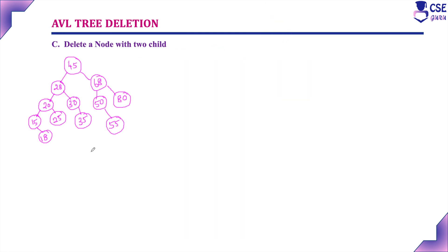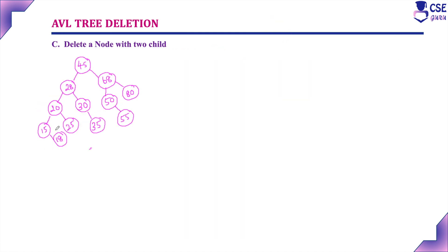Consider this AVL tree. Checking the balance factors: 0, -1, 0, +1, 0, -1, here 3 minus 2 is +1, and here 0, -1, 0. The number of left subtree elements is 4 minus 3, which is +1. So this is an AVL tree — a binary search tree with valid balance factors.